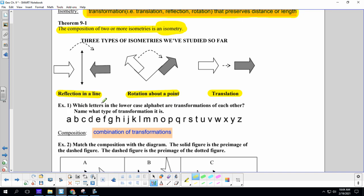So here's a fun thing, which letters in the lowercase alphabet are transformations of each other? So what type of transformation is it? I know one for sure, it is P, Q, and P, Q is a reflection.